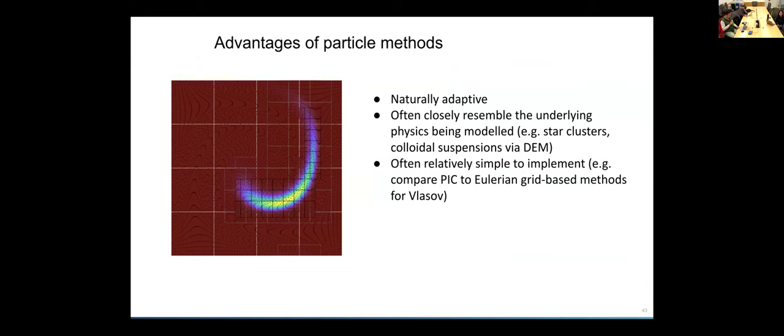Some advantages of particle methods: particle methods are naturally adaptive. The particles naturally tend to cluster where more resolution is needed. They also often closely resemble the underlying physics being modeled, for example, if you're modeling an n-body problem where each particle is a star, or in the colloidal suspension in the discrete element method. And they're often relatively simple to implement compared to grid methods. For example, compare using PIC to solve Vlasov systems compared to doing Eulerian grid-based methods for the same problem.